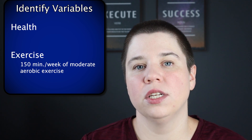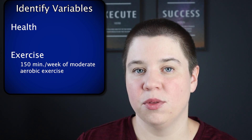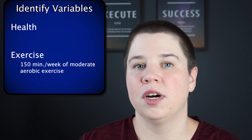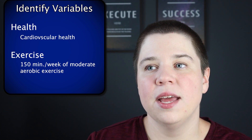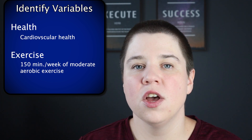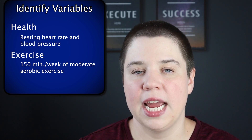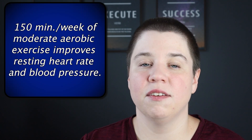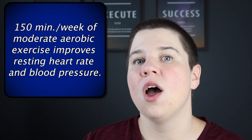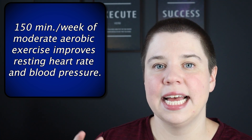Now we want to test how that improves health. There are a lot of different factors for health, so what if we drop it down to cardiovascular health? And then we can drop it down again, because cardiovascular health has a lot of different measures. So if we looked at resting heart rate and blood pressure, now we have: '150 minutes of moderate aerobic exercise per week improves resting heart rate and blood pressure.' We've now gotten very, very specific.